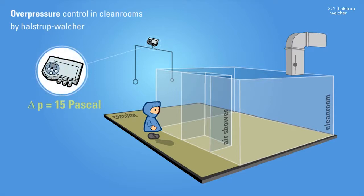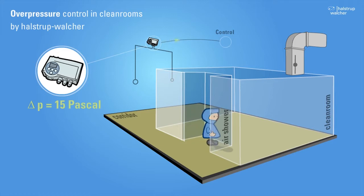This example clearly illustrates the mechanism used to maintain a positive pressure within the clean room. A high-precision differential pressure transmitter from Halstrup-Walcher continuously monitors the pressure and sends readings to the control system.